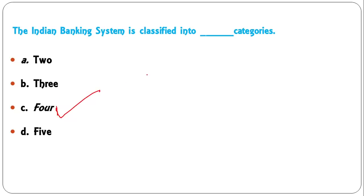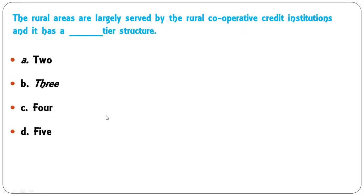The Indian banking system is classified into how many categories — 2, 3, 4, or 5? It is classified into four categories: at the top is the RBI, second is commercial banks, third is cooperative banks, and fourth is regional rural banks.